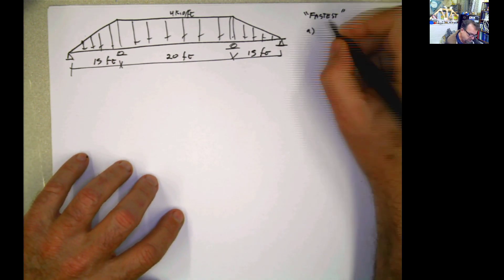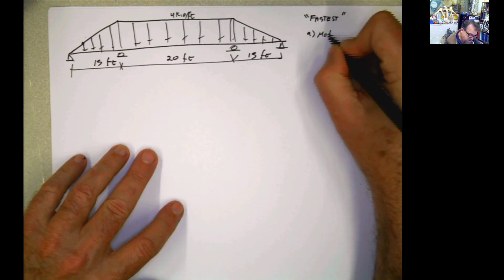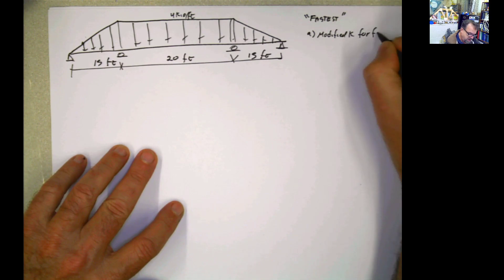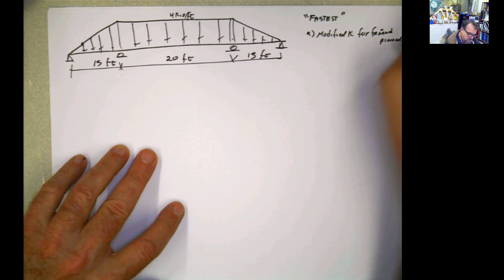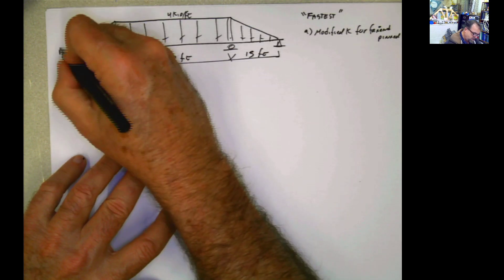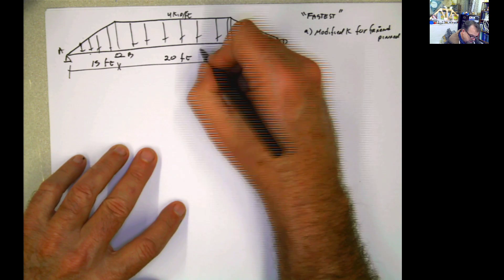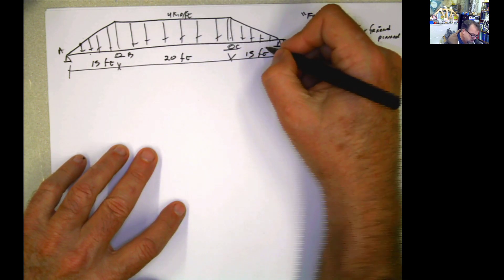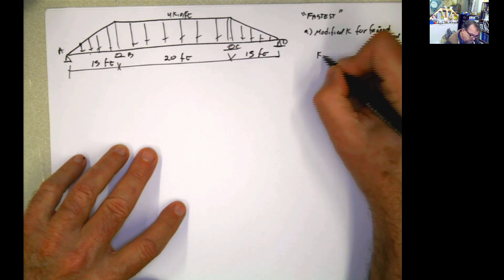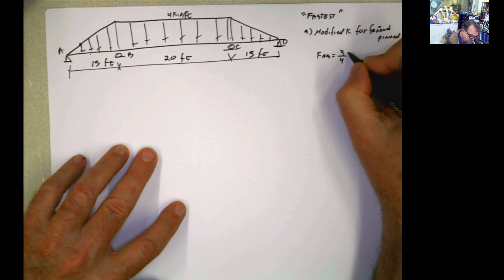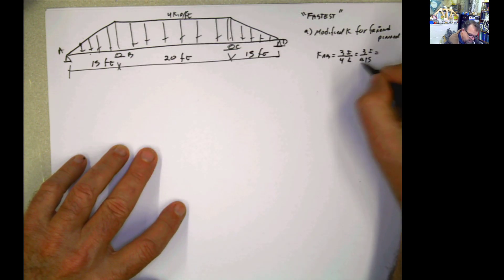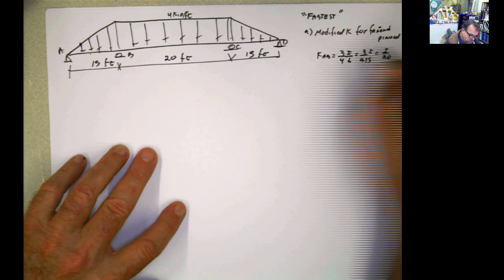First, we're taking advantage of the modified k for far end pin. Far end pin. Meaning, the k for A, B, C, D, E, F, G. The k for here is still i over 20, theoretically. The k over here is going to change. So this k is going to be 3 fourth k, A, B. It's going to be 3 fourth of i divided by l. That's what it is. So it's going to be 3/4, 1/5, i. 3 divided by 60, 1 divided by 20, or i divided by 20. That's the k for A, B.